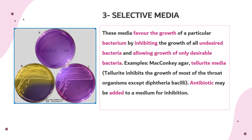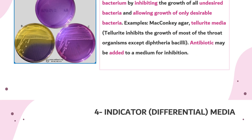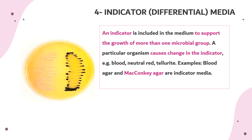The third type of routine media is selective media. These media favor the growth of a particular bacterium by inhibiting the growth of all undesired ones and allowing the growth of only one desirable bacteria, such as MacConkey agar and tellurite media. Tellurite inhibits the growth of most organisms except diphtheria bacilli. An antibiotic may also be added to a medium as a selective agent.